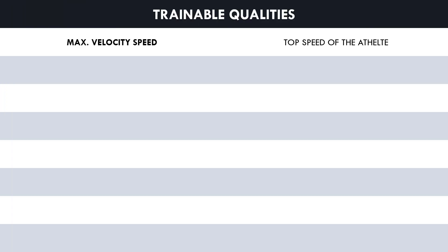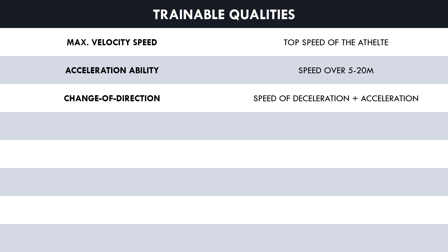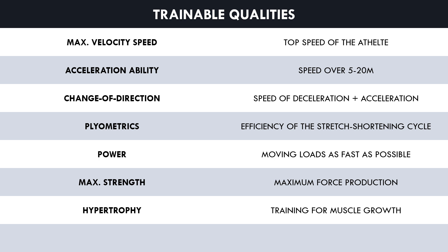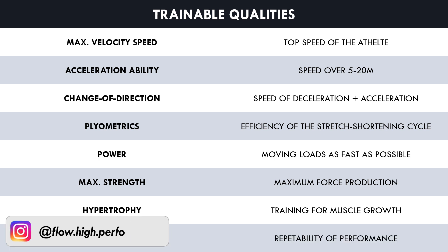We will now look at the primary training qualities that can be used during strength and conditioning training. These include: max velocity speed — how fast an athlete can run at top speed; acceleration ability — speed over the first 5 to 20 meters of a sprint; change of direction ability — how fast an athlete can decelerate and re-accelerate in a different direction; plyometrics — how well an athlete can utilize the stretch shortening cycle; power training — the ability to move moderate loads as fast as possible; max strength training — how much total force an athlete can produce; hypertrophy training — training for muscle growth; and endurance training — the repeatability of performance.